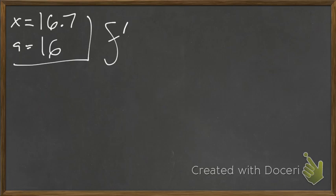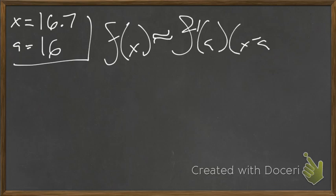All right, let's get started. We said that our x was 16.7 and that our a was 16, and that the equation we were going to need to use is f(x) is roughly equivalent to f'(a)(x - a) plus f(a). Now, when we say f of a, what are we talking about?